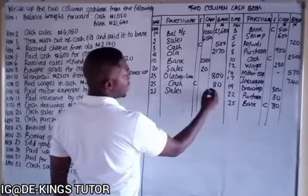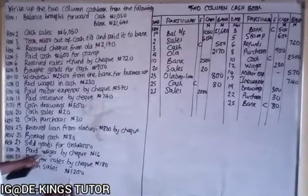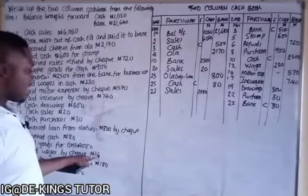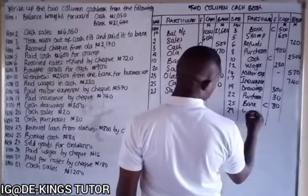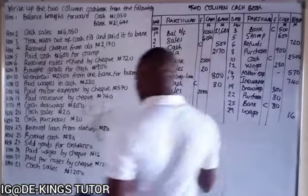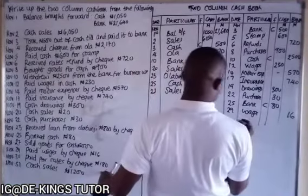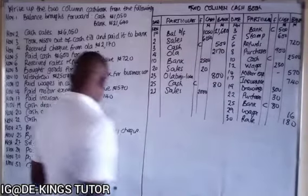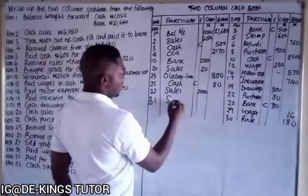November 27 — sold goods for cash 2,000, debit side under cash column: sales 2,000. November 29 — paid wages by check 16, credited under the bank column: wages 16. November 30 — paid for rates by check 180, credited under the bank column: rates 180. November 31 — cash sales 1,200, debit side under cash column.